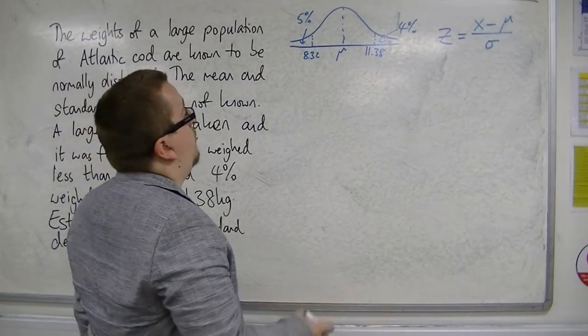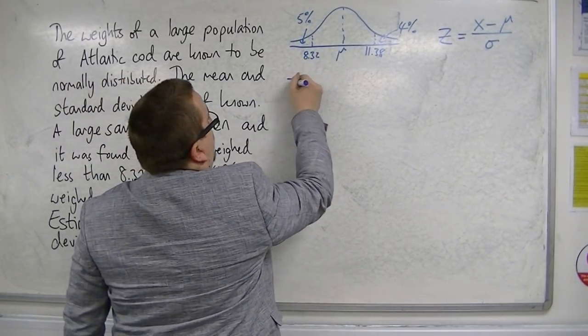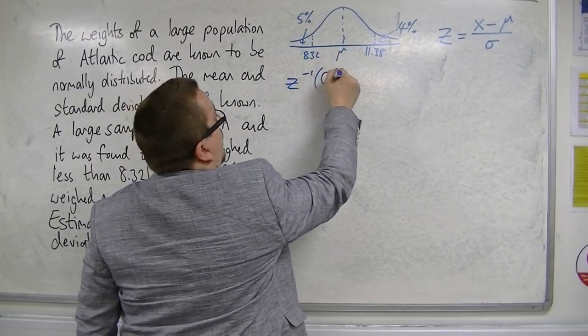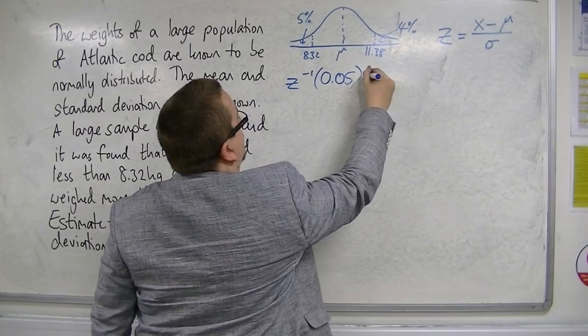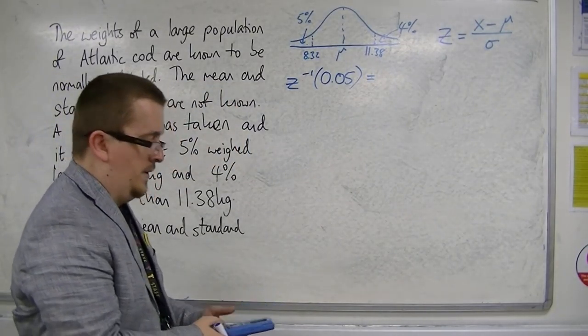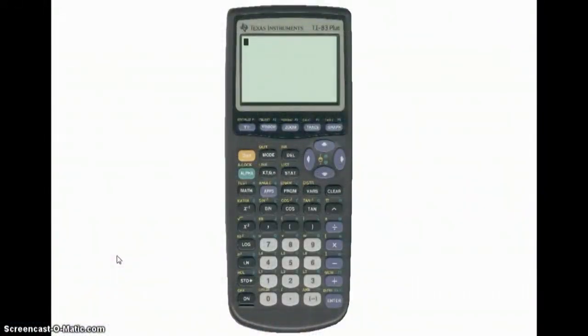So, if we look at finding the inverse norm of 5%, so 0.05, we do that on the calculator, which I'll show you now. Here we need the bottom 5%, so that as a decimal is 0.05, and so we want to find the inverse norm of 0.05.